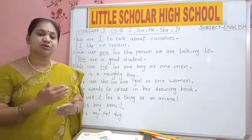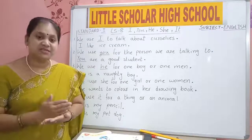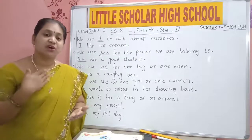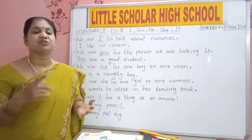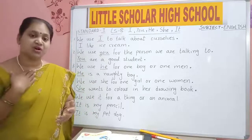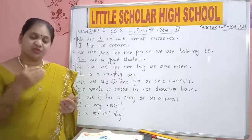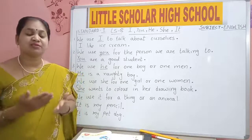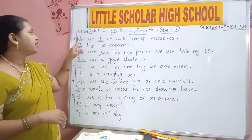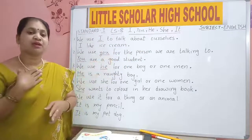I like to draw. I like to read books. I like to go to school. I like to eat chocolates. I like to eat pizza. All these sentences are about saying something about yourself. I like to read books. I like to complete my own work. All these sentences are used to say something about yourself. We use I to talk about ourselves.